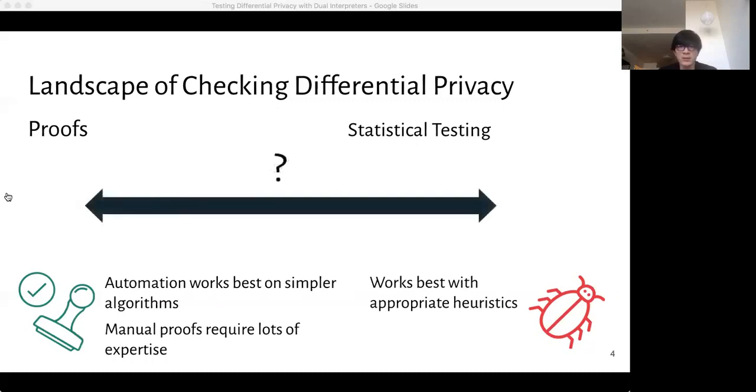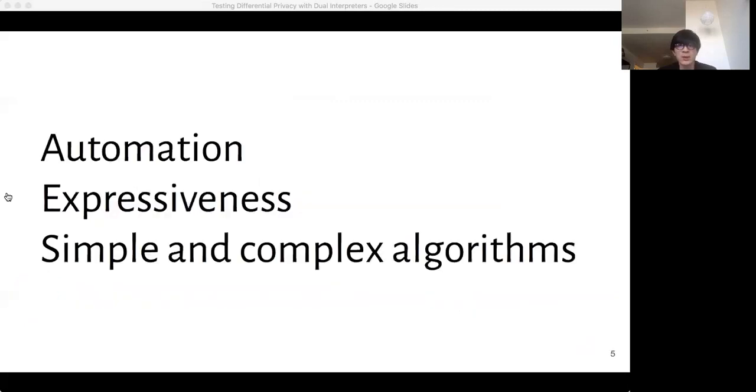So is there something that we can reach for in the middle? Something that tries to capture the good characteristics from both kinds of systems? The characteristics that we want are the high level of automation from type systems and statistical testing systems, the expressiveness of programming logic methods, and the wide range of algorithms from simple ones to really complicated ones.